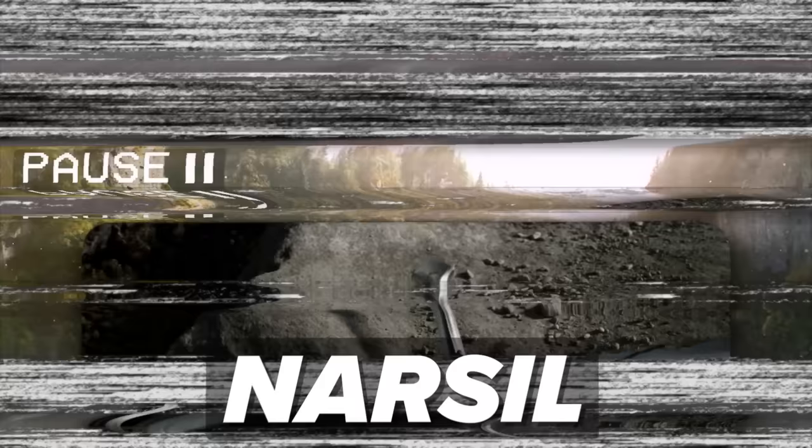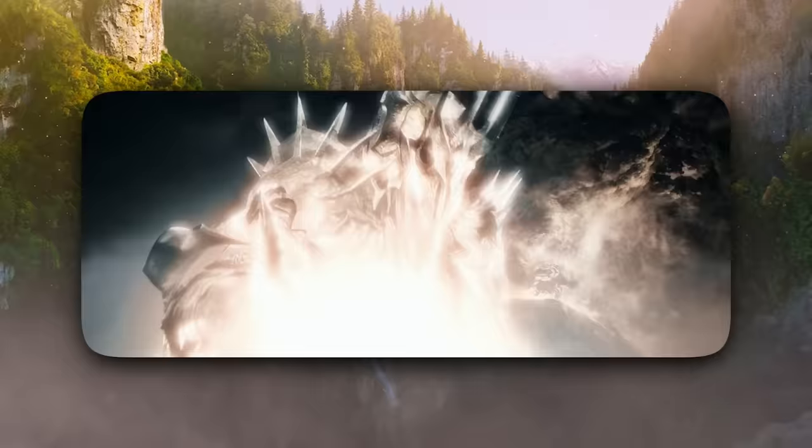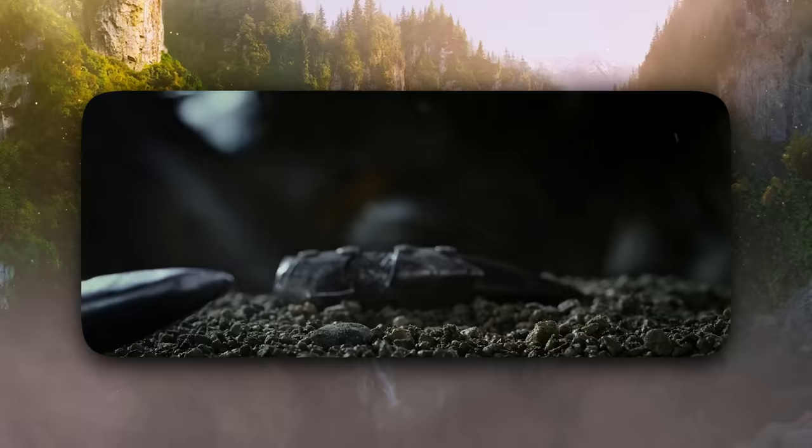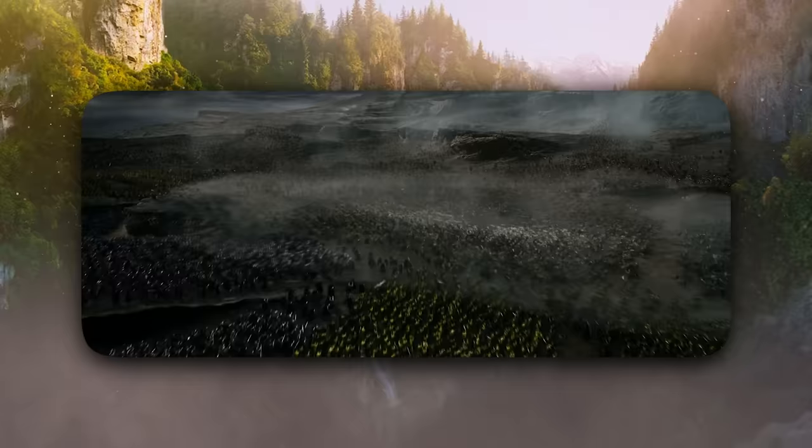Actually, artist Alan Lee cameos as one of the human kings over on the far right there. More on him in a second. Meanwhile, artist John Howe appears as one of the kings on the other side. He's the bearded one who holds the ring as if it disgusts him. We see this gorgeous map of Middle Earth.